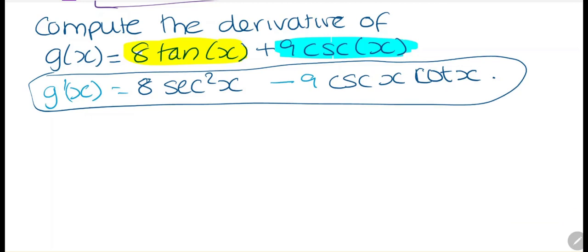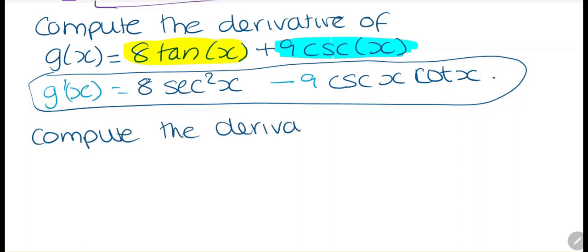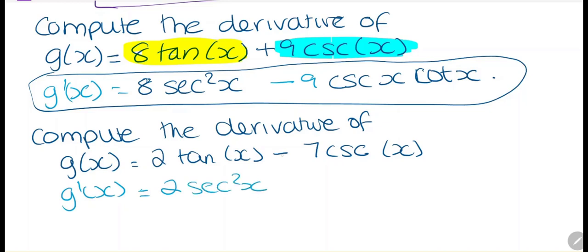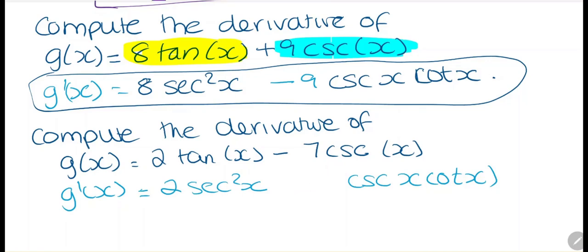Let's check another one. Compute the derivative of g(x) = 2tan(x) - 7csc(x). Taking the derivative: 2 stays the same, tan of x becomes secant squared of x. This time we have negative 7, and the derivative of cosecant is negative — negative cosecant x cotangent x. Because we're multiplying a negative and a negative, this term becomes positive, so we change this to plus 7 cosecant(x) cotangent(x).